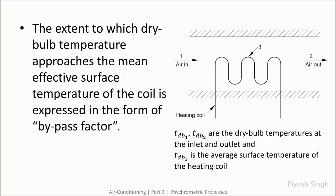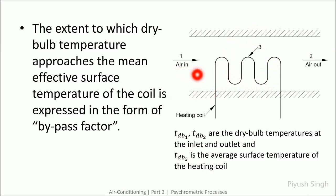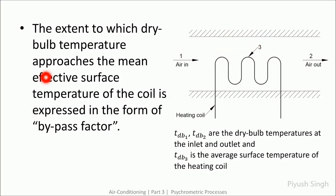The incoming air is at condition 1, the outlet condition is 2, and the coil surface temperature is at condition 3. Ideally, the air will come in contact with the coil and should reach the coil surface temperature. But in practice this is not observed, and the outlet temperature is somewhat between conditions 1 and 3.